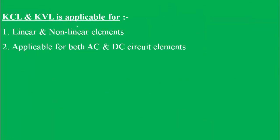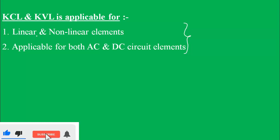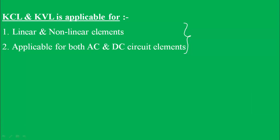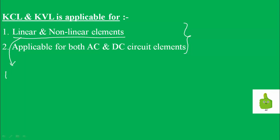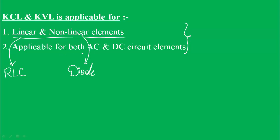For UGCNET and SET exams, an important MCQ is: KCL and KVL are applicable for which elements? The correct answer is both linear and nonlinear elements. Linear elements are passive elements like R, L, C; nonlinear elements include components like diodes. Also remember, KCL and KVL are applicable for both AC and DC circuits — not just DC. These two points are very important.